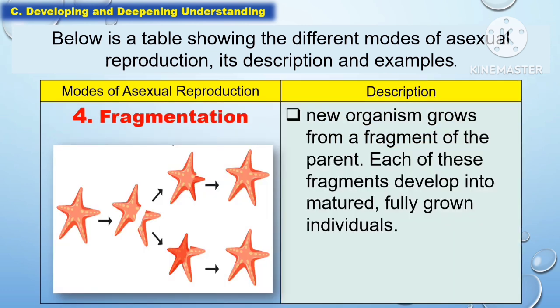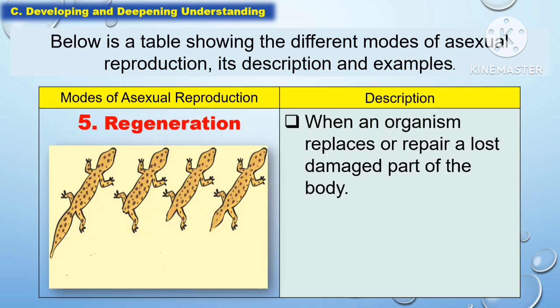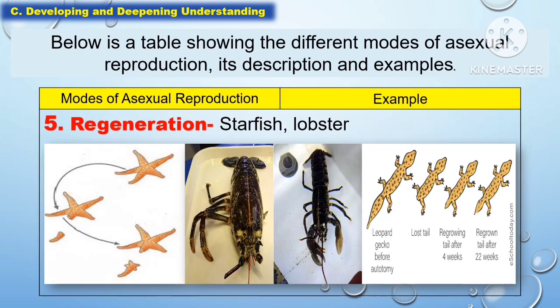Another mode of asexual reproduction is fragmentation, where a new organism grows from a fragment of the parent. Each of these fragments will develop into matured, fully grown individuals. Examples of fragmentation are planaria and cnidarians. Another mode of asexual reproduction is regeneration, where the organism replaces or repairs a lost or damaged part of the body. Examples of regeneration are the starfish and the lobster.